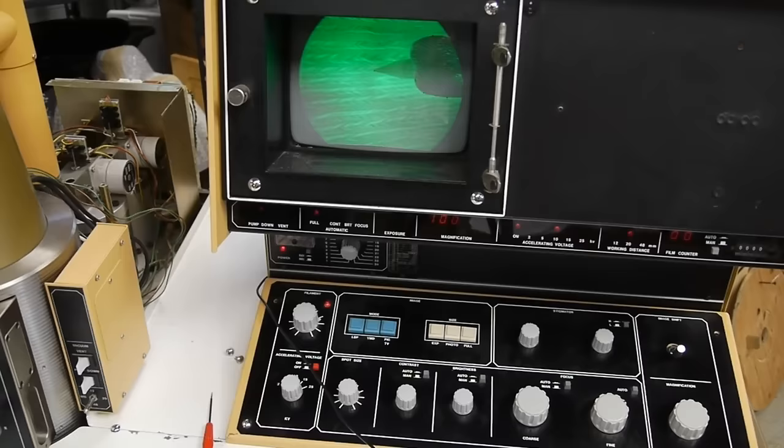After getting everything aligned and turned on you can see the video image that the electron microscope creates. It is possible to get real-time imagery running at close to 60 fields per second, but the resolution in this mode is quite poor and the contrast is very low.